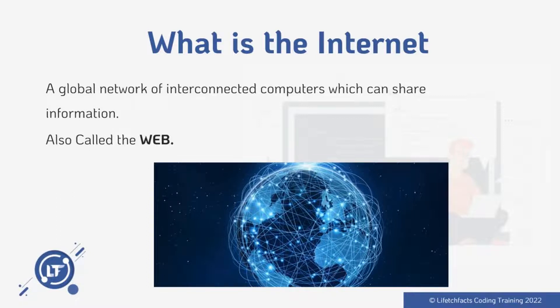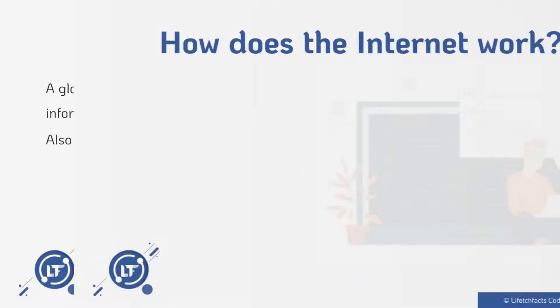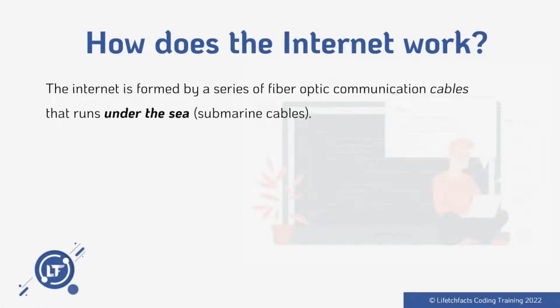So how does the internet work? The internet is formed by a series of fiber optic communication cables that run under the sea. These cables are also called submarine cables. We have giant, long cables that run throughout the oceans, under the seas, and these cables help in transmitting information throughout the internet.